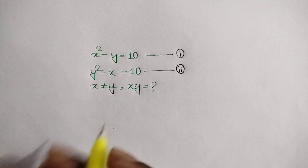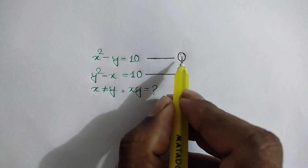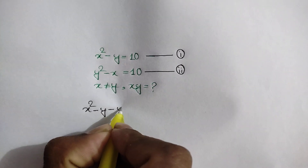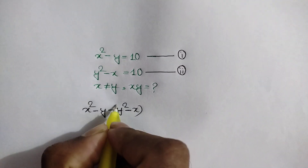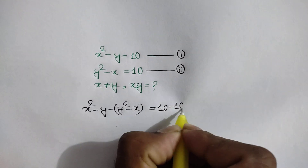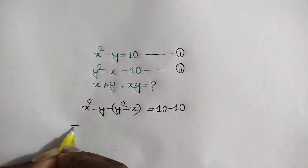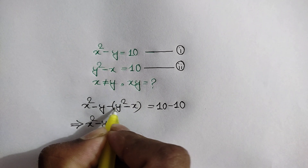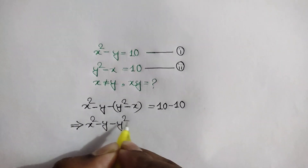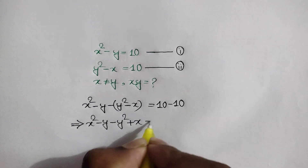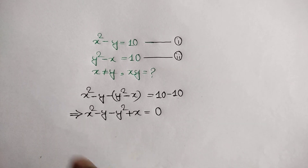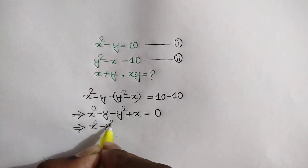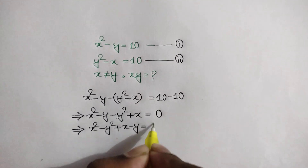Now, if we subtract equation number 2 from equation number 1, we can write x squared minus y minus y squared minus x is equal to 10 minus 10. Rearranging it, we can write x squared minus y squared plus x minus y is equal to 0.